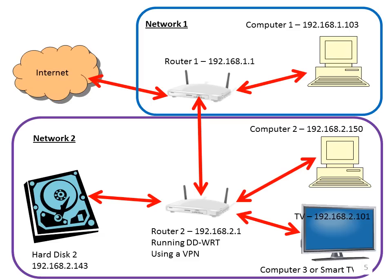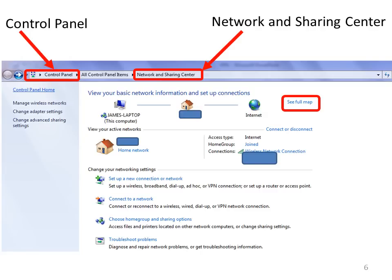In my system, router 1 is called 192.168.1.1 and router 2 — running DD-WRT and OpenVPN — is running 192.168.2.1. The reason why these two routers can't talk to each other is because connecting the routers in that method results in a separate network: network 1 being attached to router 1 and network 2 being attached to router 2.